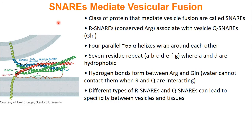The proteins that do this are called SNAREs, and there are two basic types of SNAREs. You have your R-SNAREs which have arginine, and your Q-SNAREs which have glutamine. These are parallel alpha helices that will wrap around each other.